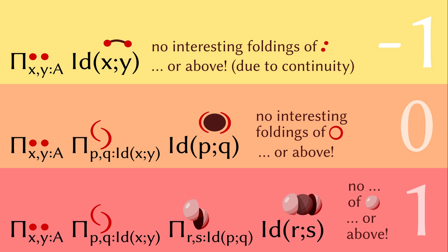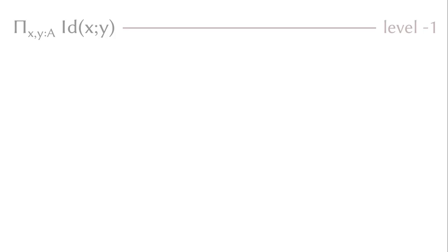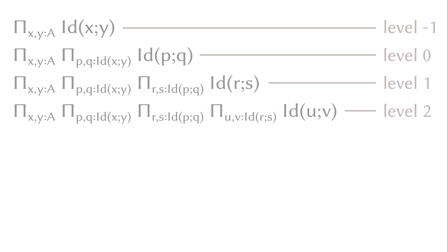Again, the condition says that there is no non-trivial folding of the two spheres, or any sphere of a higher dimension, for example, the three-sphere or four-sphere. We can use the decomposition of the spheres to write down the condition of truncation levels, and they eventually lead to the recursive definition that we had.